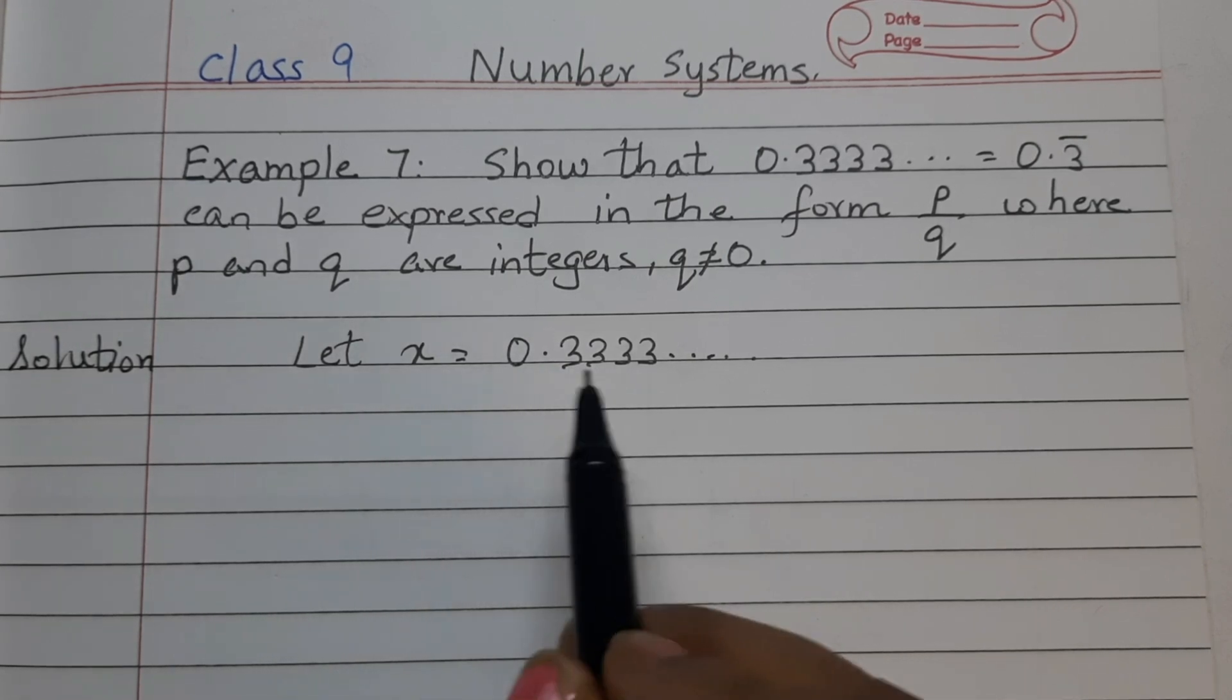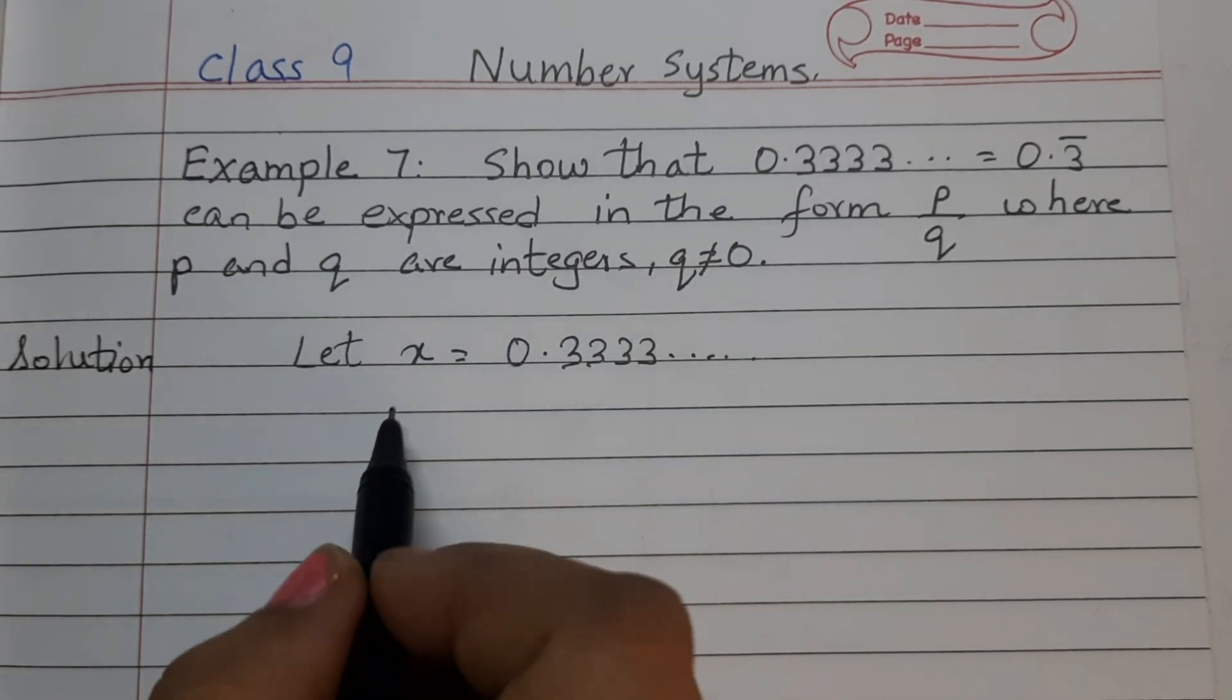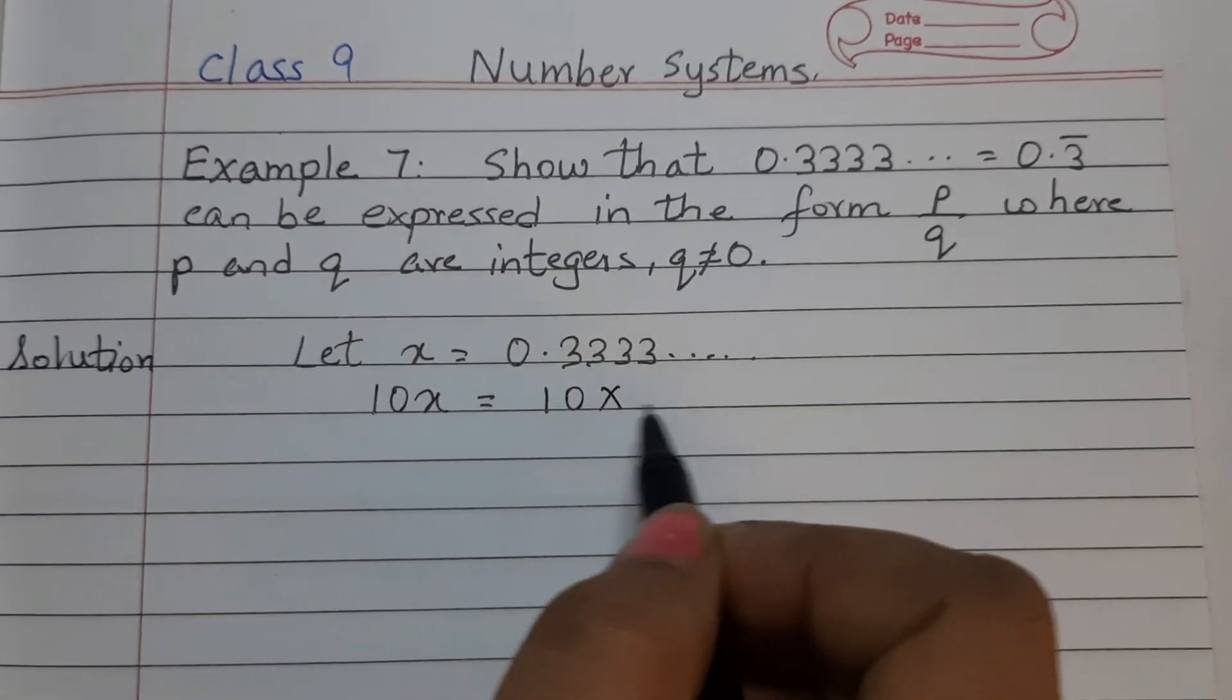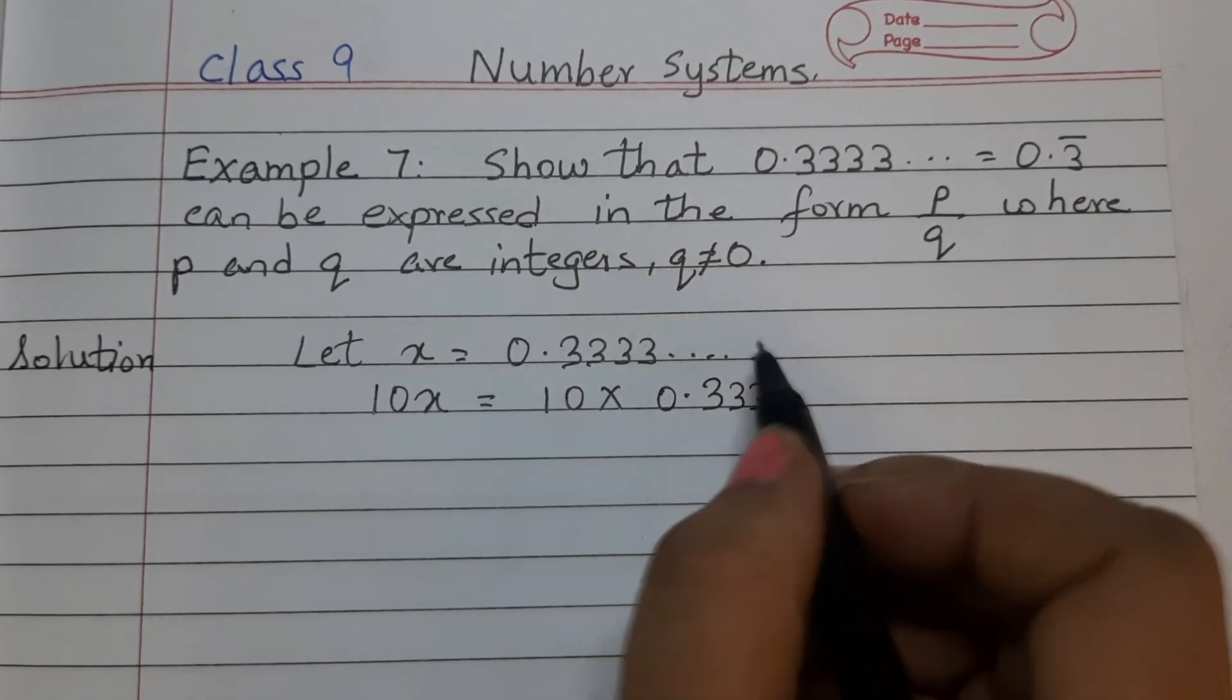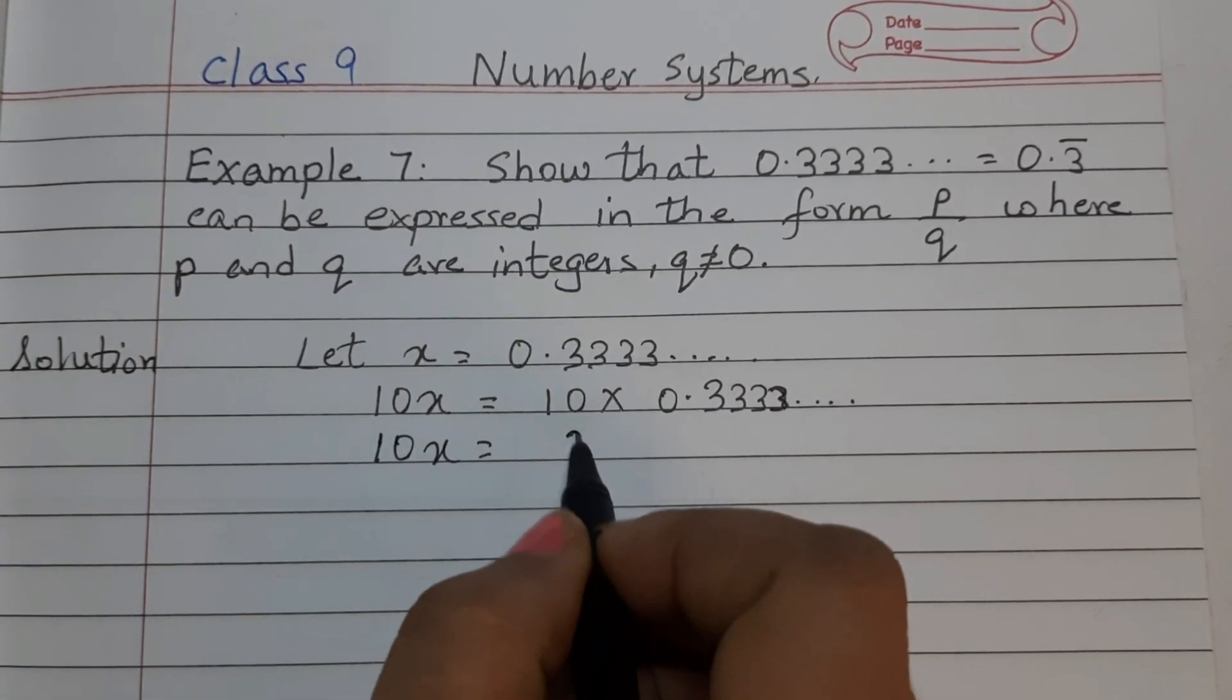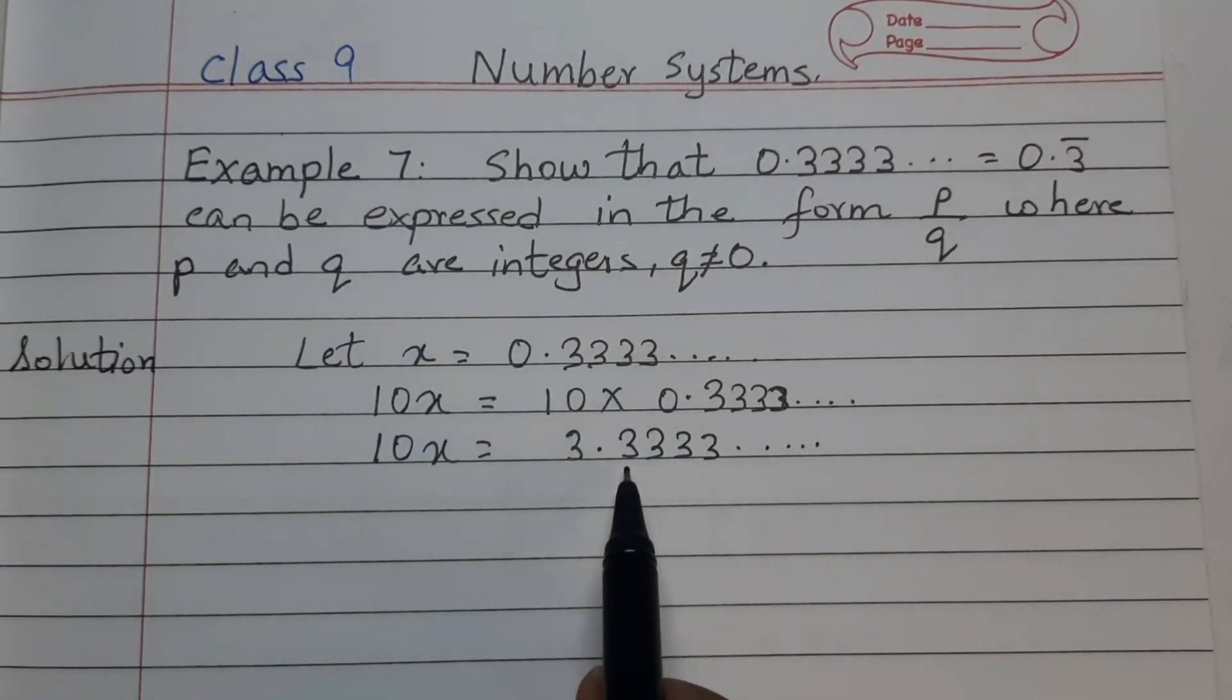So here is just one digit. Multiply both sides by 10. 10x and here 10 times 0.3333. So this is 10x equals to 3.3333.